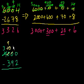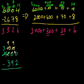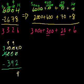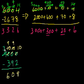100 becomes 10 tens. But then we need to borrow for the ones place, so let's take 1 of those 10 tens — so it's a 9, we have 9 tens left. And then we add that 10 to the ones place. Now we are ready to subtract. 10 minus 2 is 8. 9 minus 9, or 90 minus 90, is 0. 900 minus 300 is 600. And 3,000 minus nothing is 3,000.